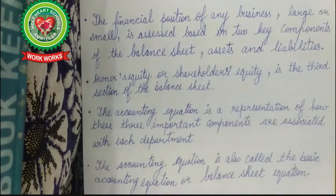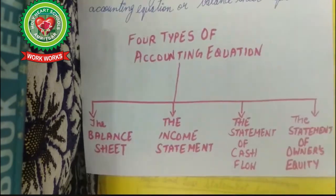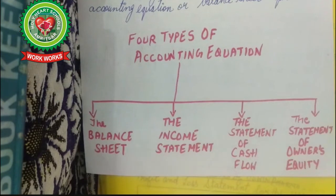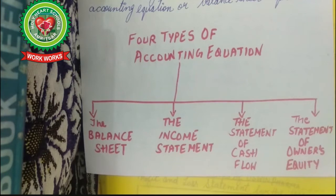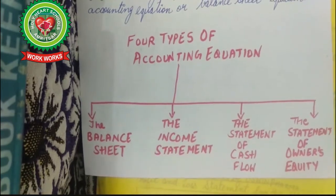There are four types of accounting equations: the balance sheet, the income statement, the statement of cash flows, and the statement of owner's equity. In the accounting equation we show assets and liabilities — similar is the case of the balance sheet. In the income statement we show all incomes and expenses. In the statement of cash flows we consider cash inflow and cash outflow. The same thing applies to the statement of owner's equity.